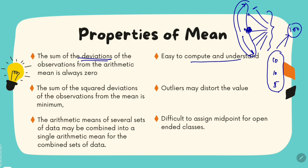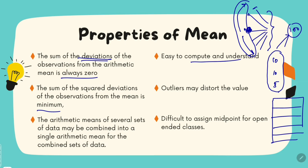If you square the deviations and sum them up, they will be minimum at the mean. Now, suppose we have a very large data set having millions of records. The good thing with mean is that if we divide this data set into small chunks, find their means individually, and then find the mean of means, we will get the mean of the entire data set. The arithmetic means of several data sets may be combined into a single arithmetic mean for the combined data set.